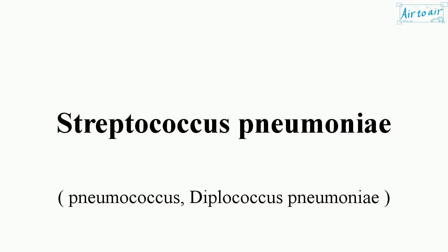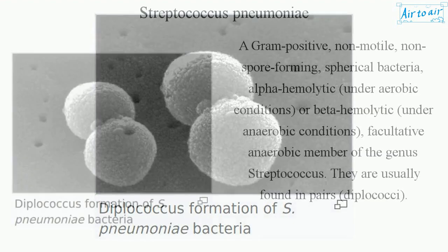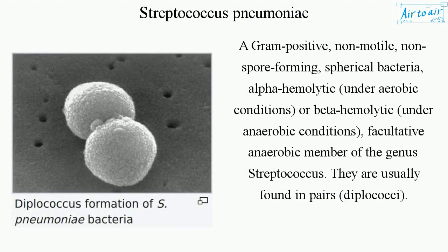Streptococcus pneumoniae is a gram-positive, non-motile, non-spore-forming, spherical bacteria. It is alpha-hemolytic under aerobic conditions, or beta-hemolytic under anaerobic conditions — a facultative anaerobic member of the genus Streptococcus. They are usually found in pairs, known as diplococci.